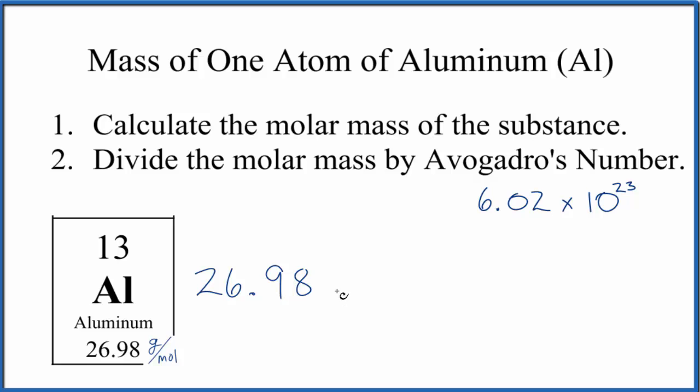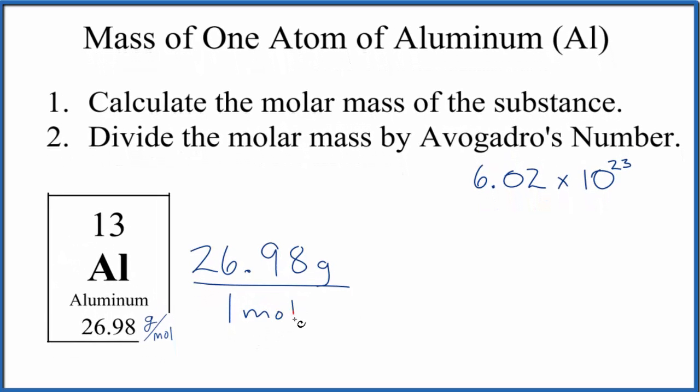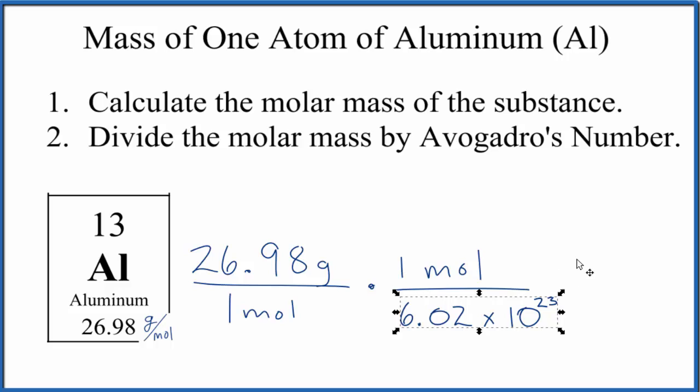We have 26.98 grams in one mole of aluminum. We're going to multiply this by a conversion factor because we know that one mole of any substance, that's Avogadro's number of particles, so we can put Avogadro's number there.